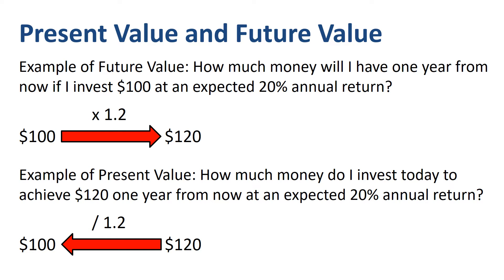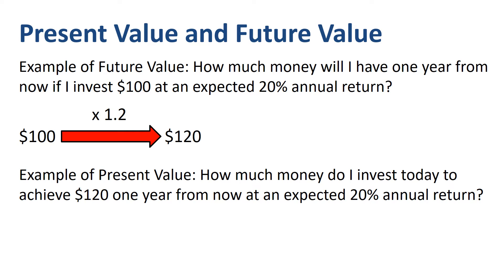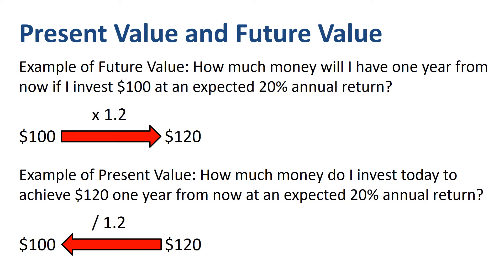To get to the future value, you move from left to right: take a present value and multiply it by 1 plus the rate of return. To get to the present value, you go from right to left: take a future value and divide it by 1 plus the rate of return.